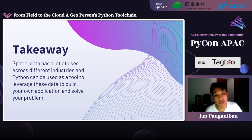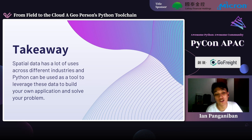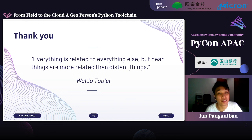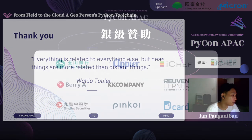Those are the three use cases. As a key takeaway: spatial data has a lot of uses across different industries, and Python can be used as a tool to leverage this data to build your own applications. My goal was to impart the knowledge of how to process spatial data. As Waldo Tobler's First Law of GIS states: everything is related to everything else, but near things are more related than distant things. Thank you.